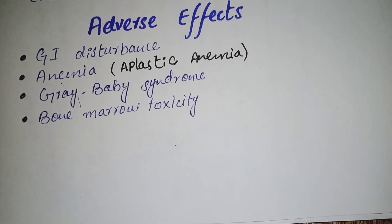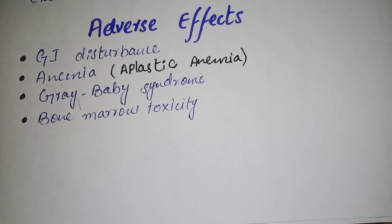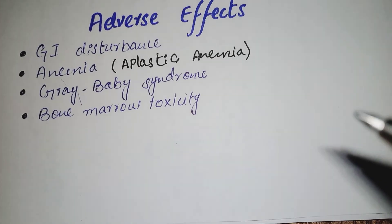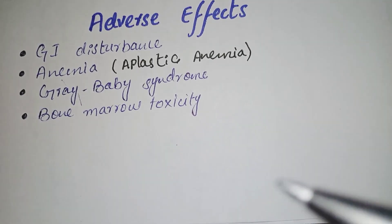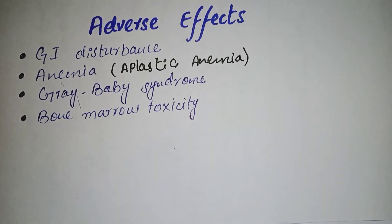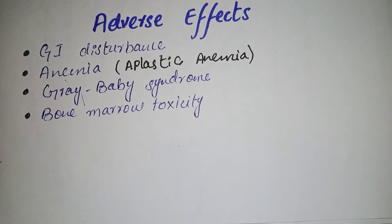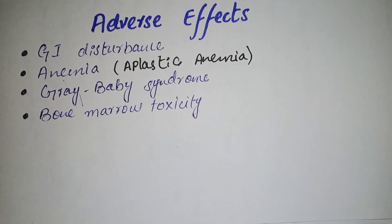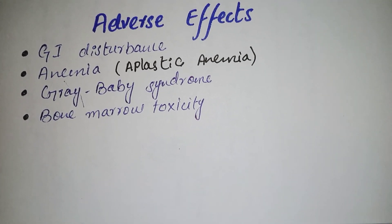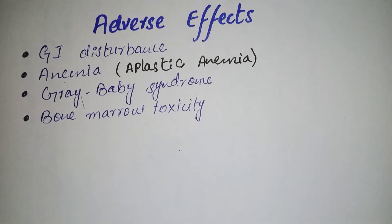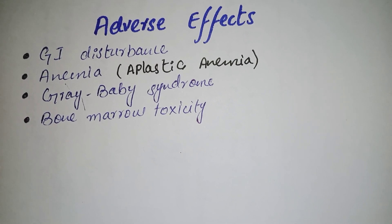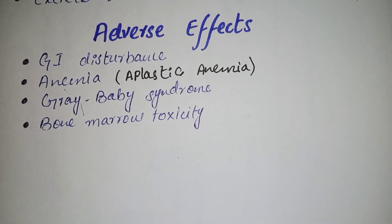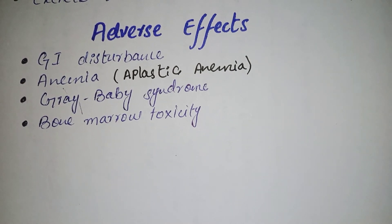Bone marrow toxicity occurs mainly due to mitochondrial injury. This leads to depression of erythropoiesis — red blood cell formation is suppressed. As a result, reticulocyte count also decreases. When these values fall, it is taken as a first warning sign and a risk indicator of chloramphenicol toxicity.